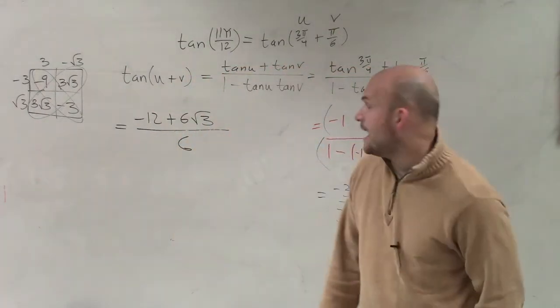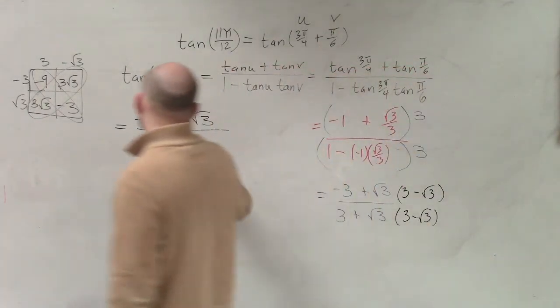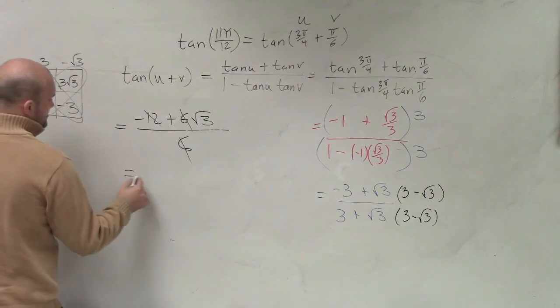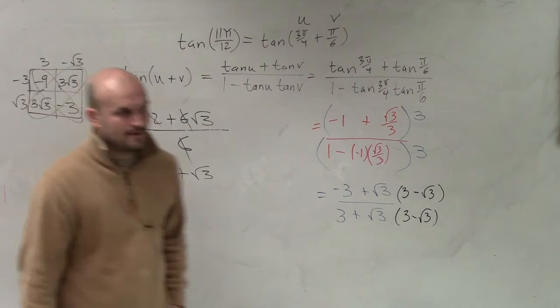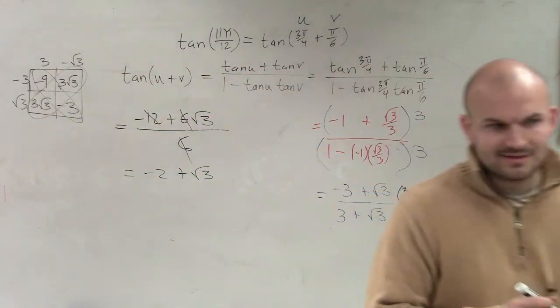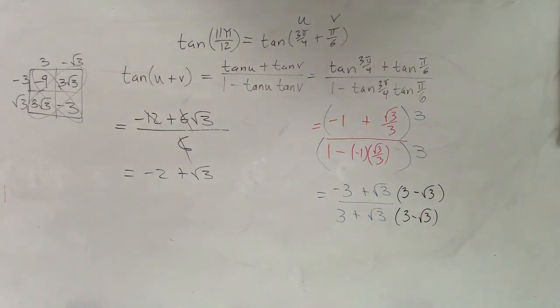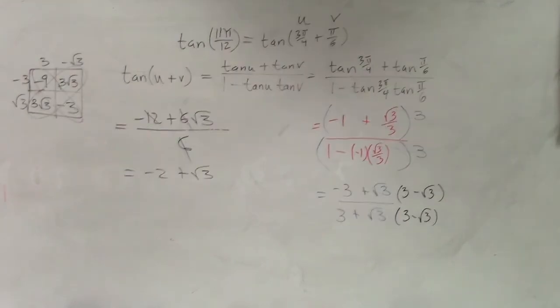Now I can divide this 6 into both terms. So my final solution is negative 2 plus the square root of 3. And that's it. Ta-da! Bye-bye.